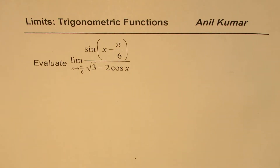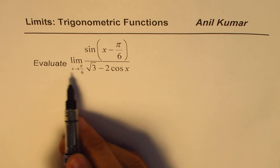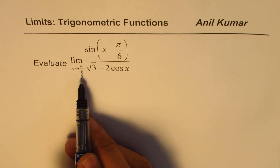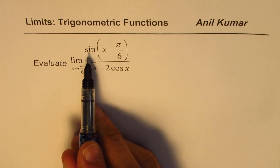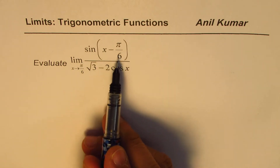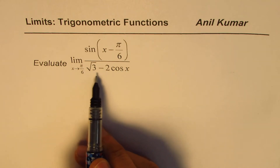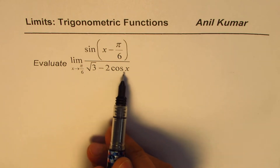I am Anil Kumar sharing with you an excellent question on finding limits of trigonometric functions. The question is: evaluate the limit as x approaches π/6 of (sin x − π/6) divided by (√3 − 2 cos x).